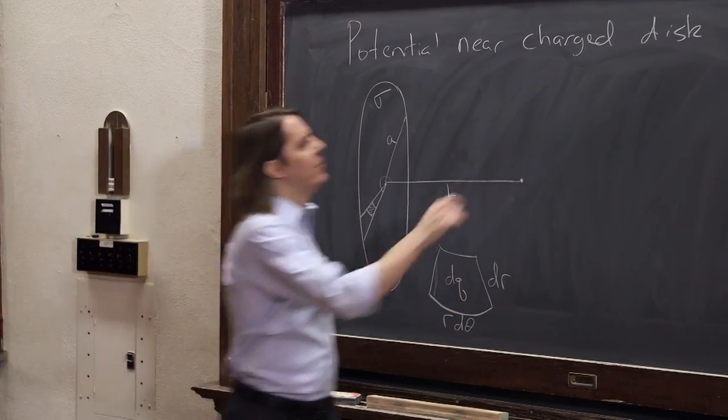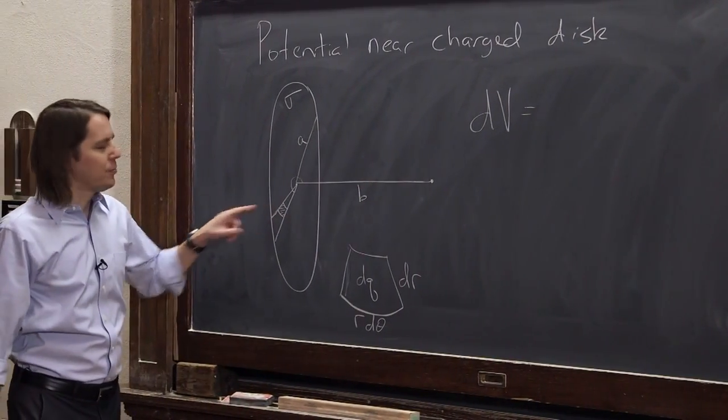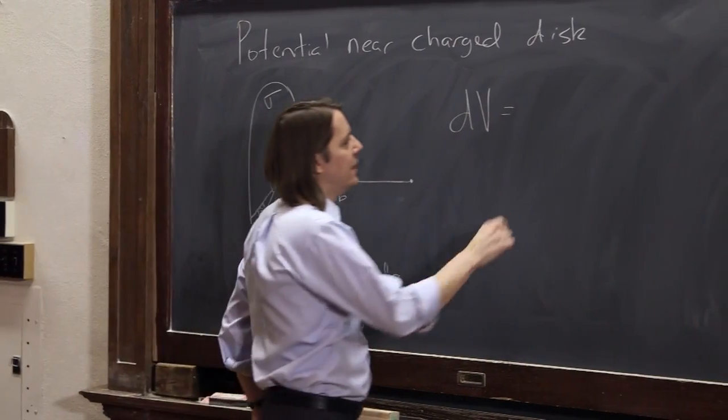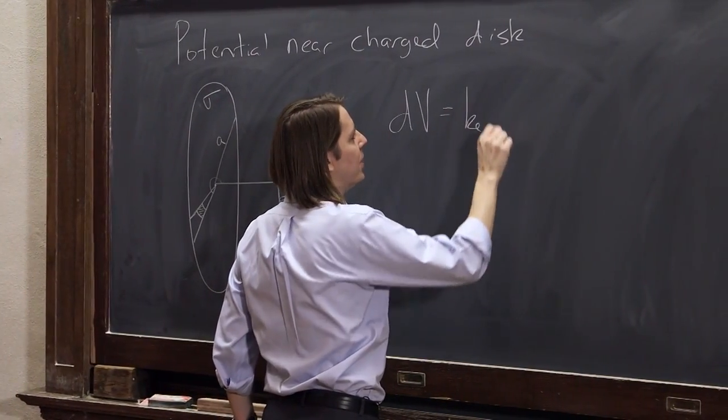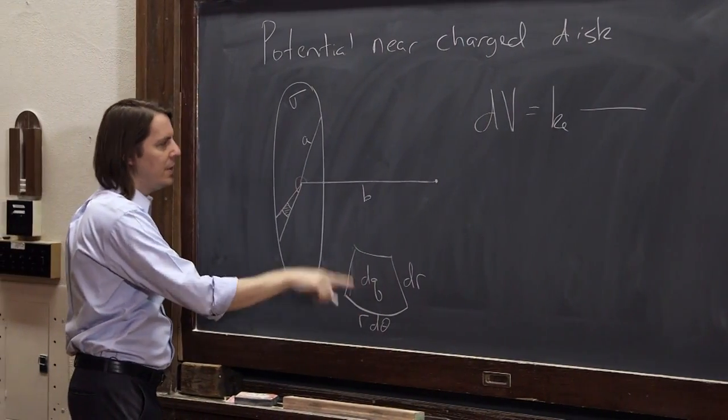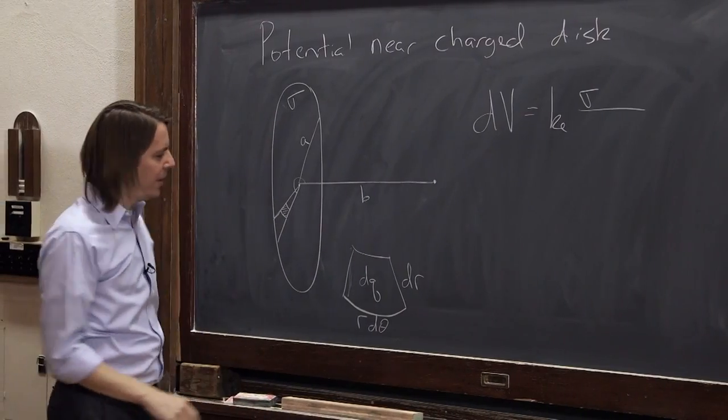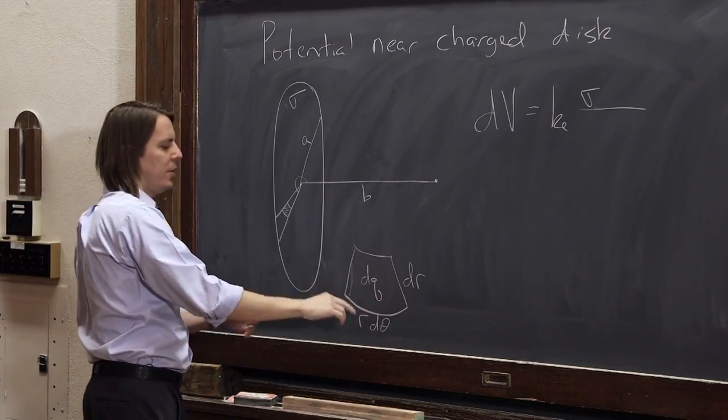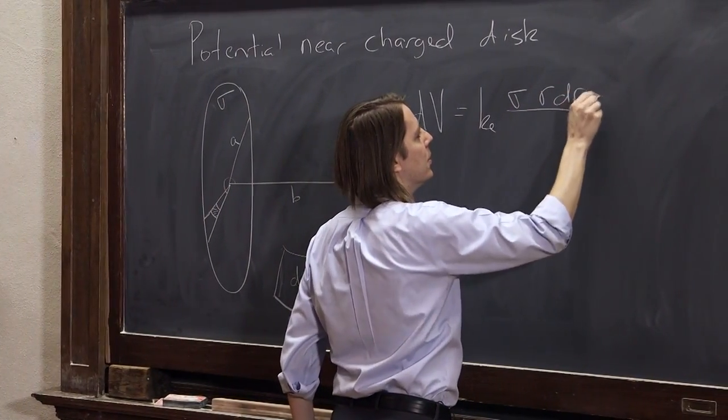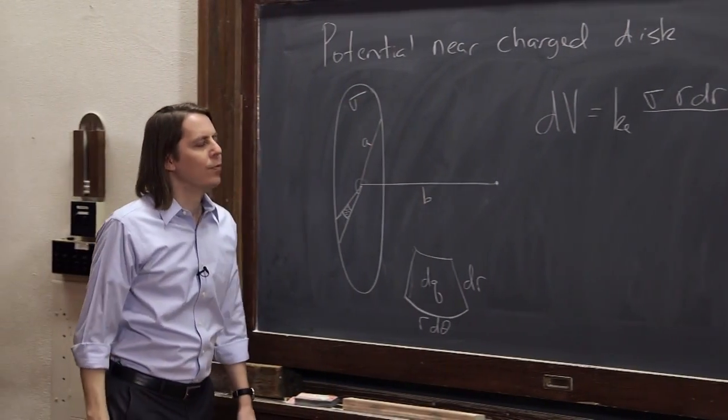So let's think about the differential potential dv. Differential potential from this little thing, treating it as a point charge out to here, is Coulomb's constant dq. And here we talked about it, dq is sigma, the charge density, times the element of the area, which is this times that. But we usually write it r dr d theta, sigma times r dr d theta over r.